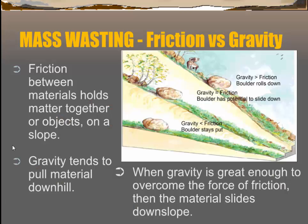First, I want to talk about the issue of friction versus gravity. Friction is basically what's holding materials up on the sides of a slope, and gravity is the force pulling materials down a slope. Where gravity is greater than friction, materials will travel down the slope — for instance, a boulder on a steep slope will come down.